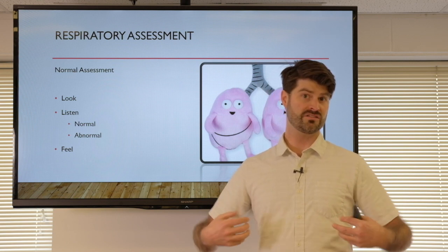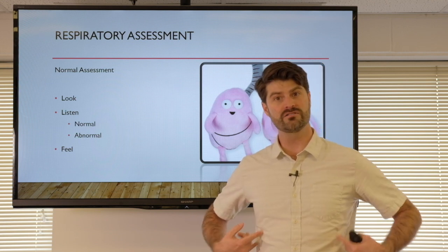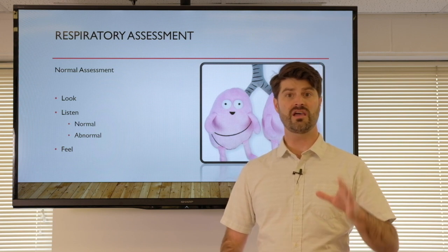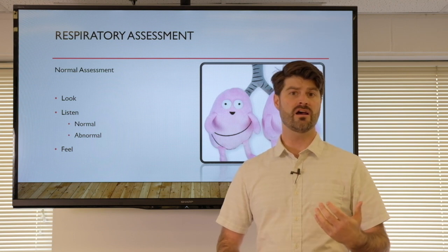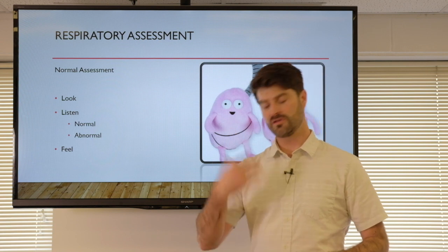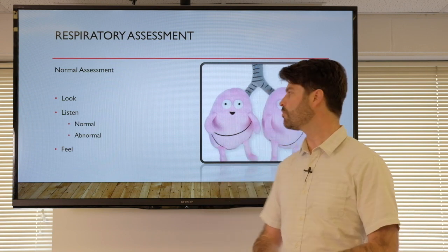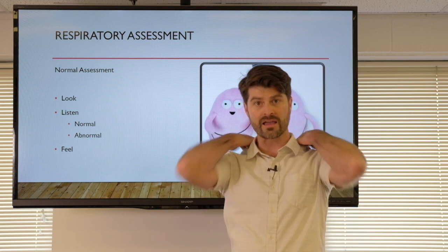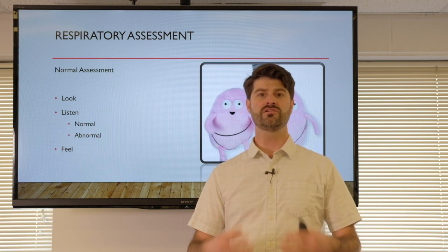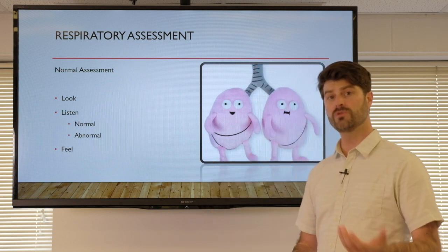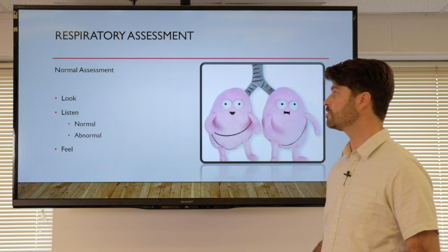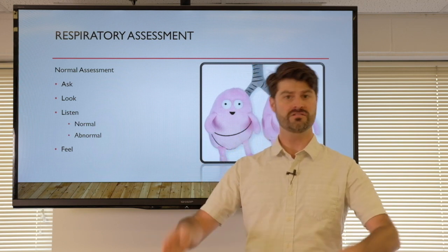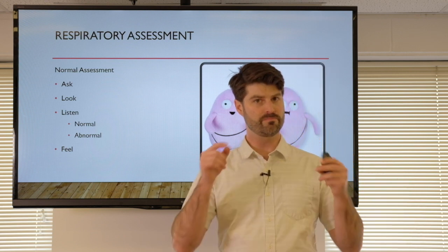We want to differentiate abnormal breath sounds: crackles, which is that rice crispy or cereal sound especially in the bases of the lungs; ronchi, which is like phlegm down in the lungs, not just in the throat; and wheezes, which indicate narrowing or constriction of the airway, causing that whistling sound in the trachea and upper and lower airway. Then we feel — you can put your hands on a patient's thorax and feel the vibrations of thick secretions as they cough or do deep breathing. Always start your assessment by asking patients about their current experience versus what's changed.